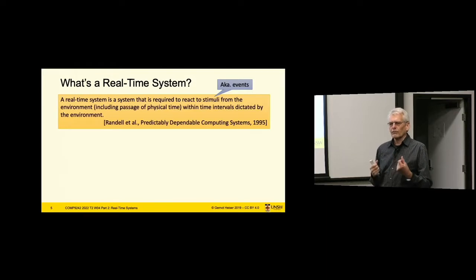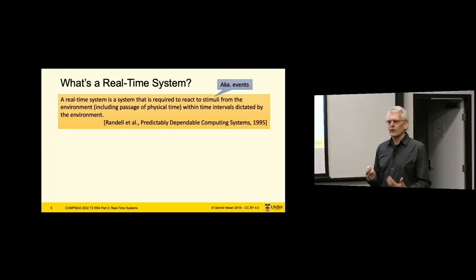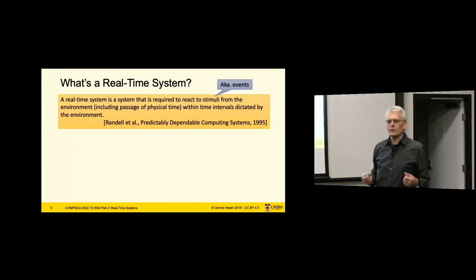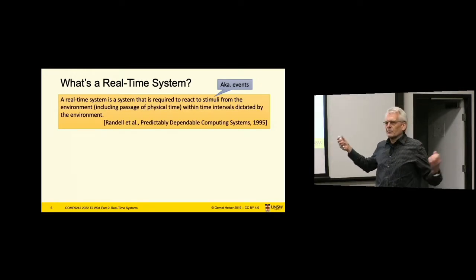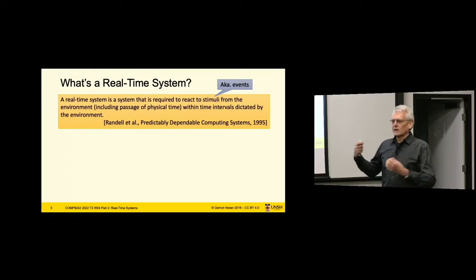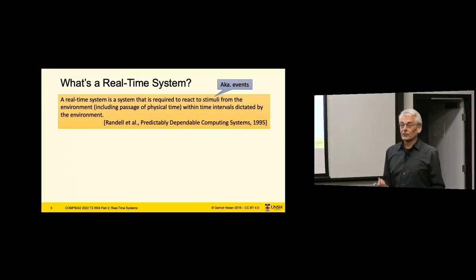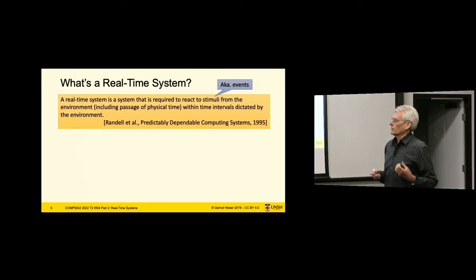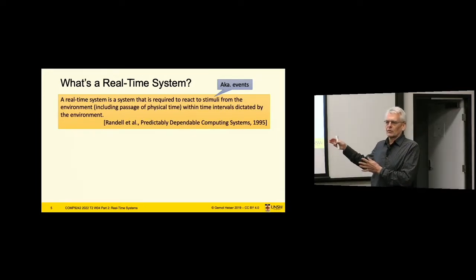There's this notion of things happening — certain events — and these stimuli in system speak we call events. As it points out, these events can be just the passage of time, giving us what's called a time-triggered system. Others are basically interrupts created by some external device. Passage of time is generally also represented by an interrupt — a timer interrupt. So in general the stimuli map onto interrupts, although sometimes you have to poll. A first approximation is: an interrupt happens and then you have a certain amount of time to do something required to deal with it.